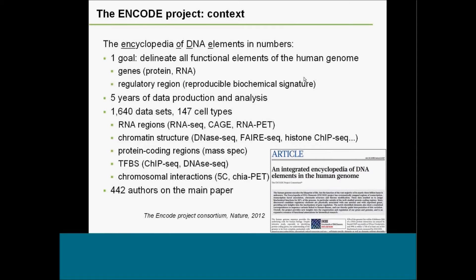To present the context of the ENCODE project — the encyclopedia of DNA elements in the human genome — the goal is to characterize all functional elements of the human genome. What do we mean by functional elements? Traditionally speaking, everything that codes for a product in the cell — these could be traditional protein-coding genes as well as what we call non-coding genes or RNA-coding genes.